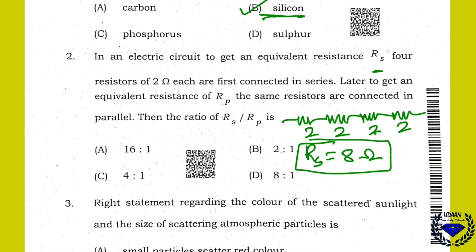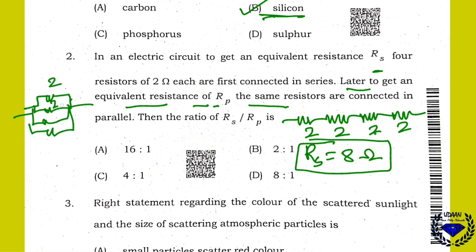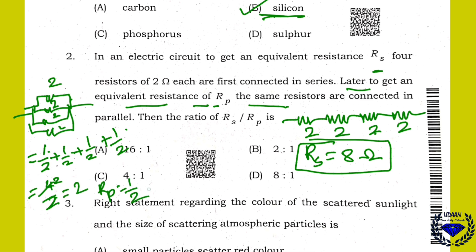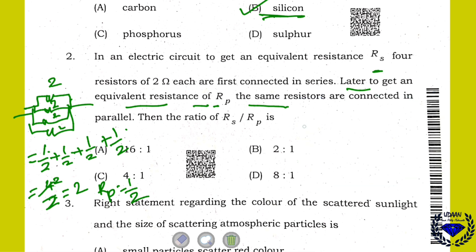Now you need to connect them in parallel. To get an equivalent resistance RP, the same resistors are connected in parallel. That means all 4 resistors connected in parallel: 2, 2, 2, 2. So equivalent resistance is 1/2 + 1/2 + 1/2 + 1/2 = 4/2. But the reciprocal is your answer. So RP is 1/2.